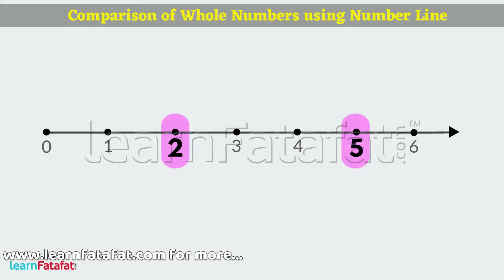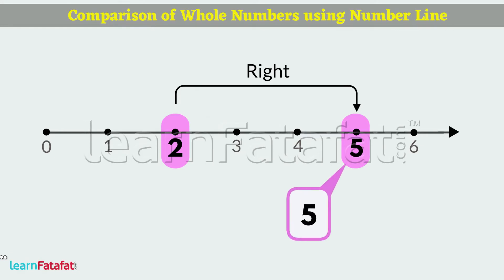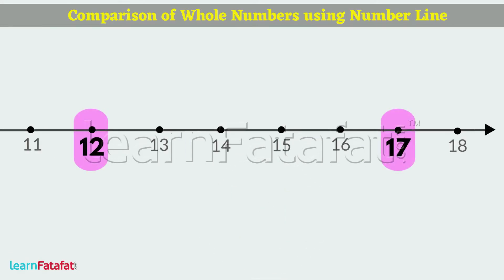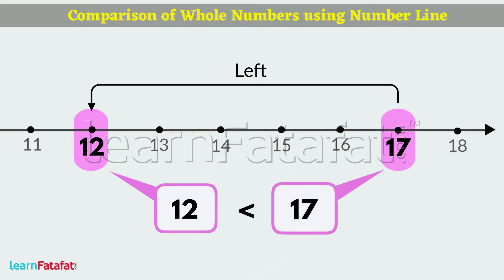5 and 2: 5 is to the right of 2, so 5 is greater than 2. 12 and 17: 12 is to the left of 17 and so 12 is less than 17.